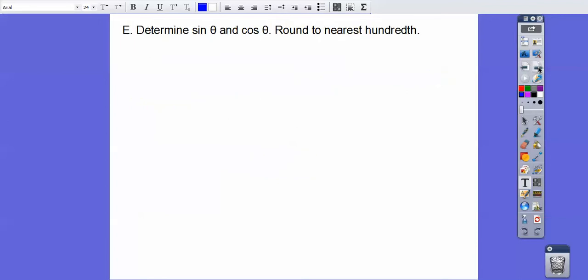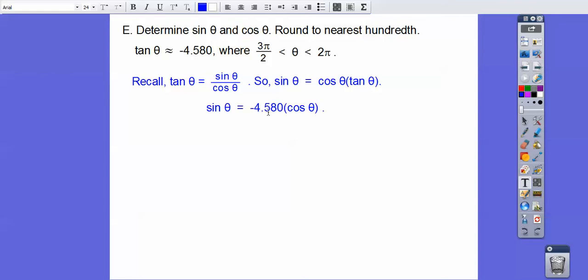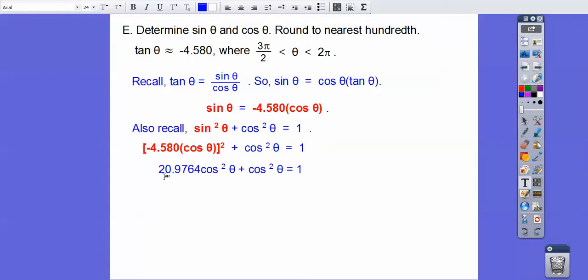Determine the sine and cosine round to the nearest hundredth. This says that the tangent equals that. Looks like we're in quadrant 4 because it's going from 3π over 2 to 2π. Remember tangent is sine over cosine. So if we multiply both sides by cosine, we get sine equals cosine times tangent. Now I'm going to substitute that in right there where the tangent is and put it in front of the cosine. And then sine squared plus cosine squared equals 1. So if this is sine of θ and it equals this, let's substitute that in there and square it. So there it is. And when we square it, we get that. And then we can combine like terms now. So 20.9764 plus 1 gets us 21.9764 cosine squared. Divide by the 21 and stuff. And then now we square root both sides.